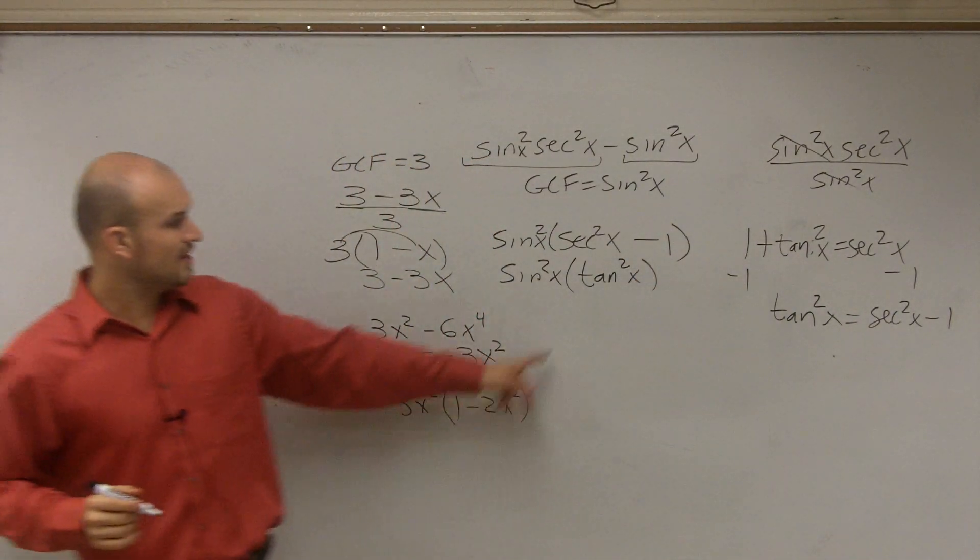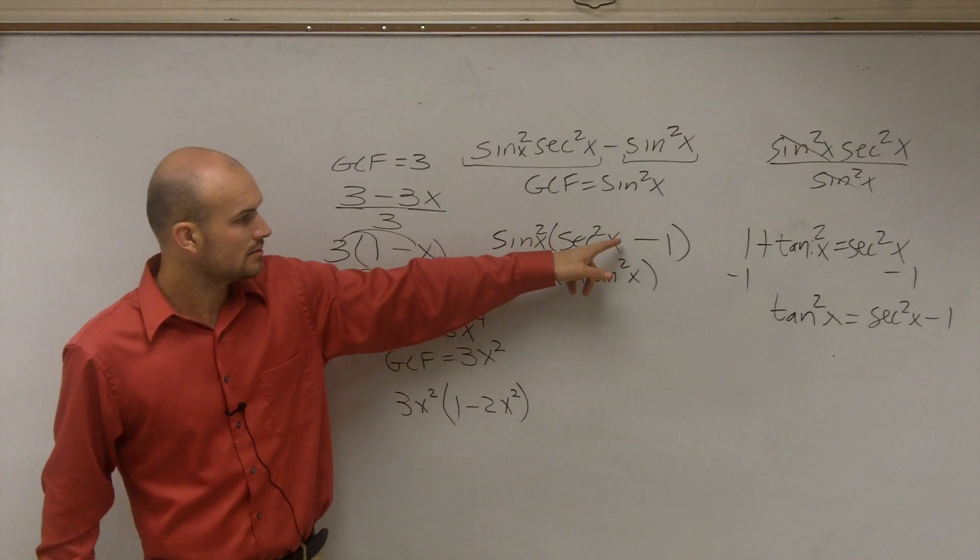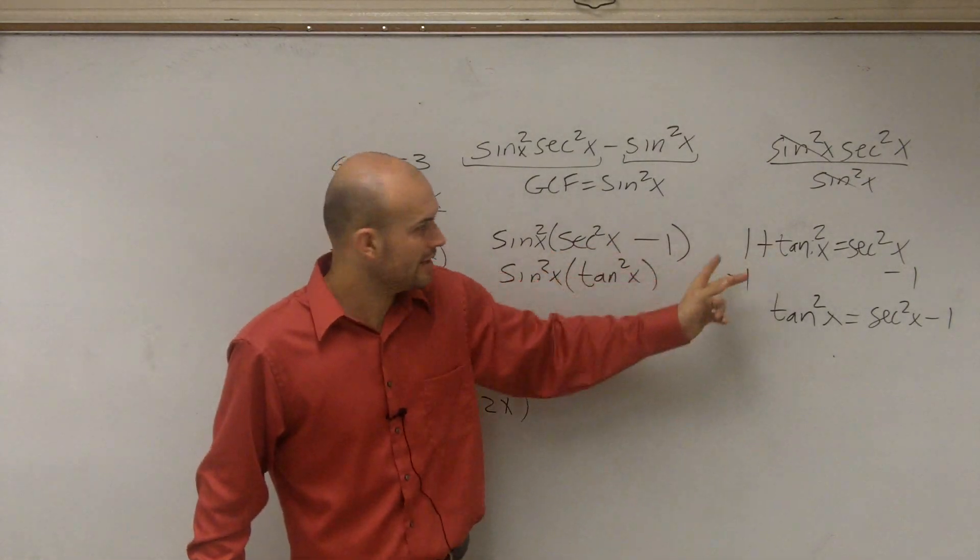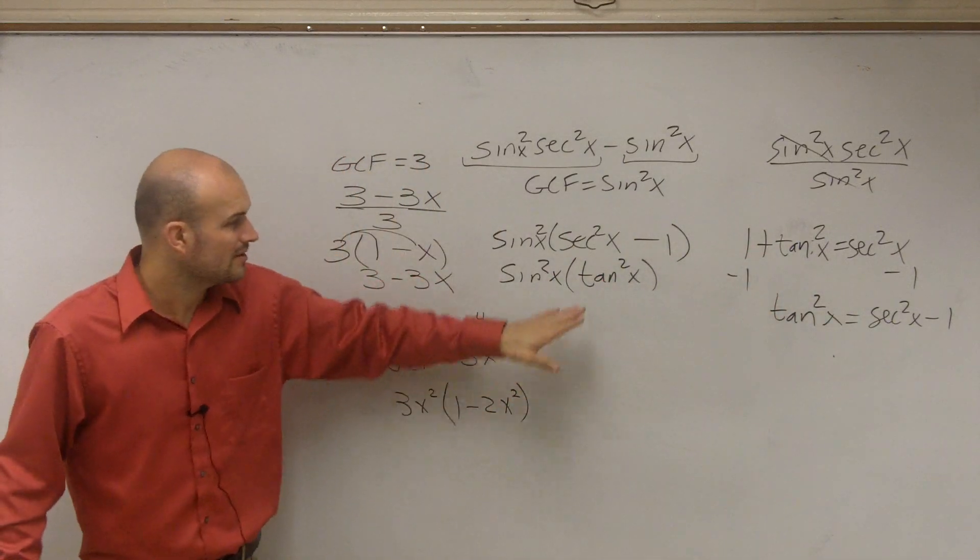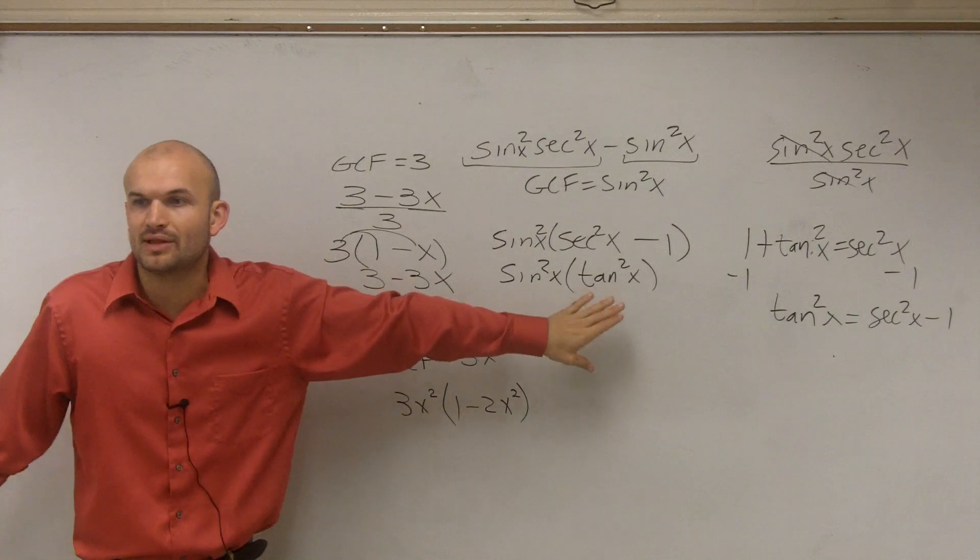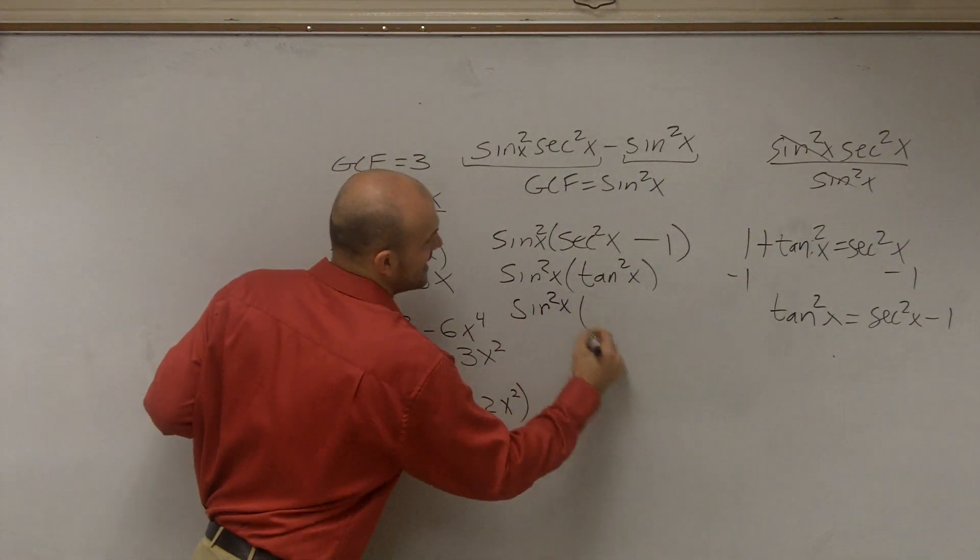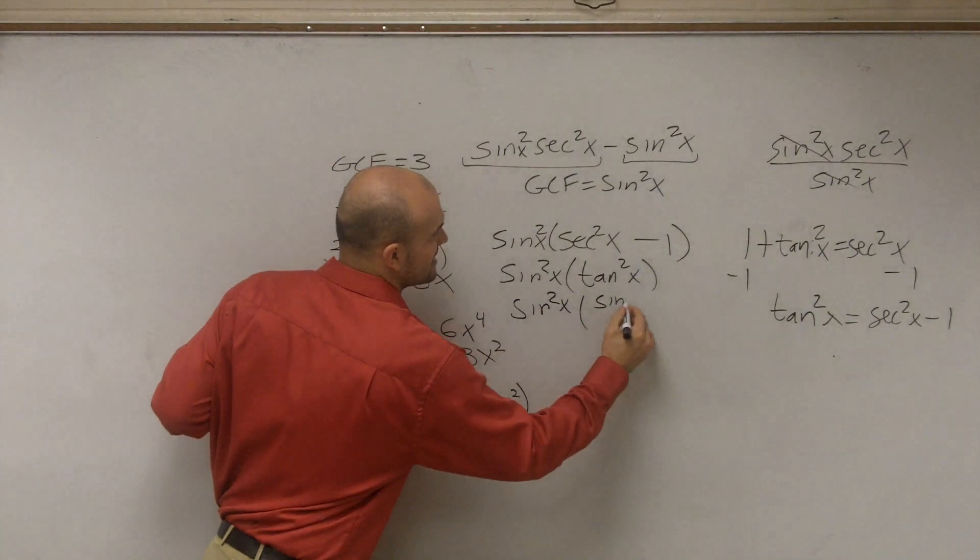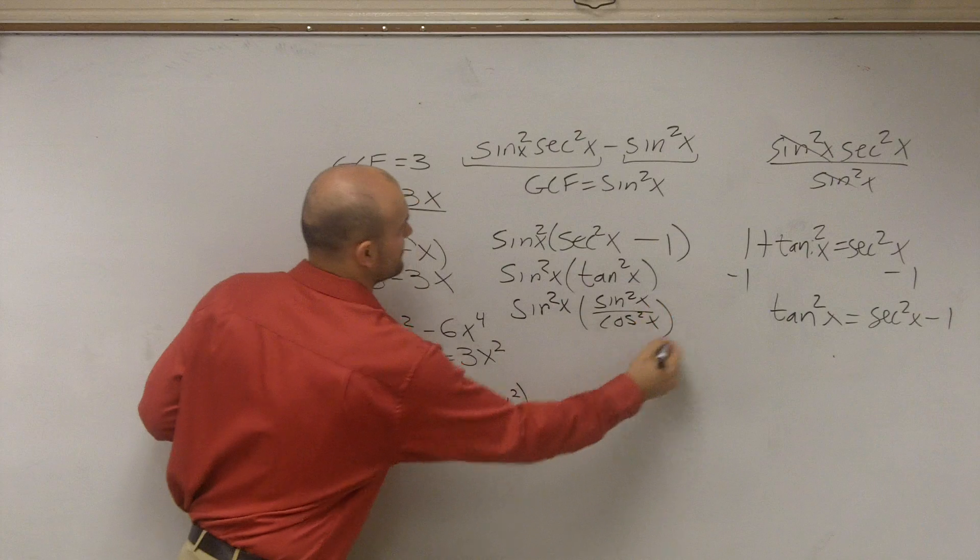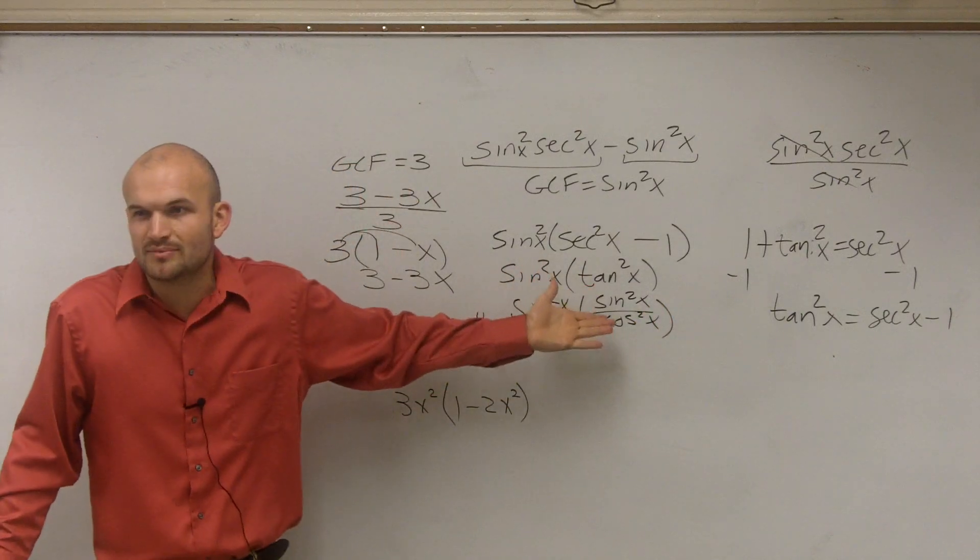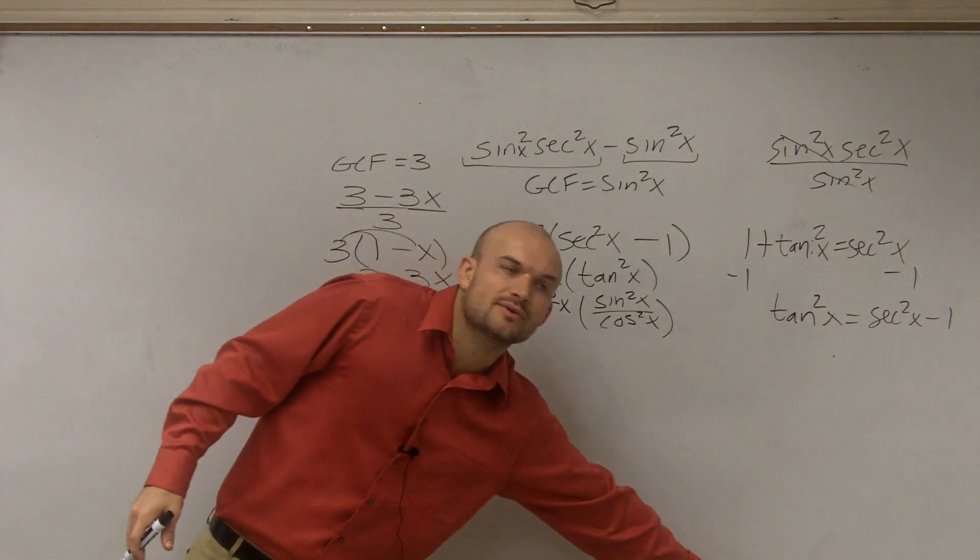Does everybody follow me? If tan squared of x equals secant squared of x minus 1, just subtract the 1 on both sides. So now, can I simplify this any further? Well, if I apply the quotient identity, sine squared of x times sine squared of x over cosine squared of x, is that really going to simplify our problem? No, not really. So we're just going to leave it as sine squared times tangent squared.